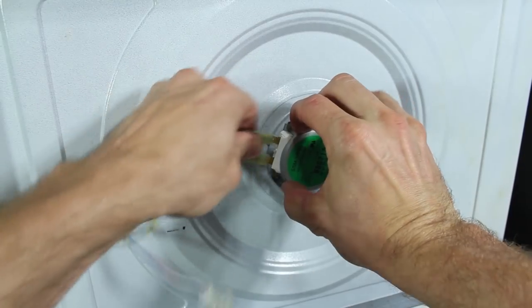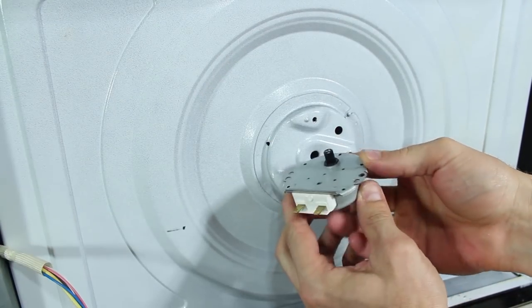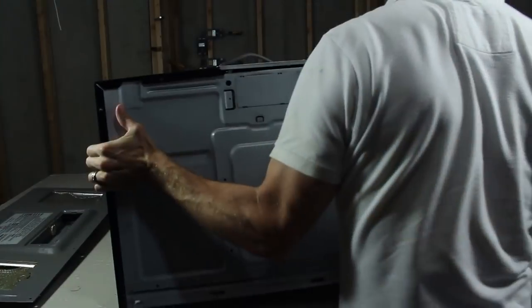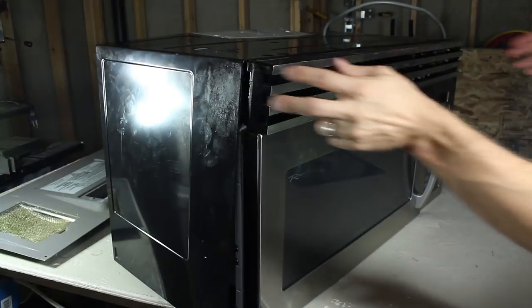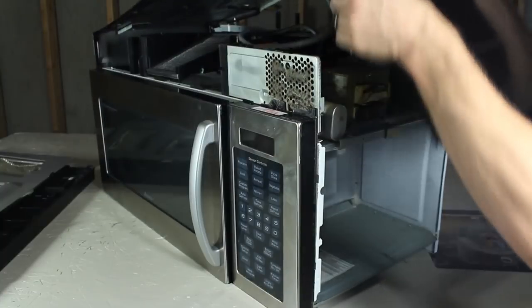By removing the bottom panel, I can access a fun little motor. This is the motor that drives the turntable you put your food on. I'm moving up to the top of the microwave to remove the screws up there, and this will allow me to pull the vent cover off, as well as the outer casing.